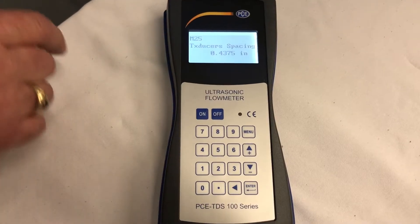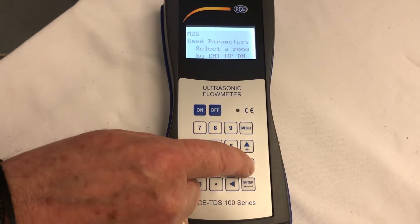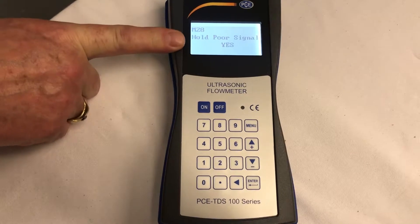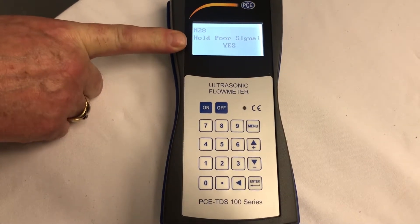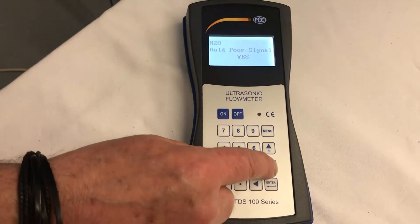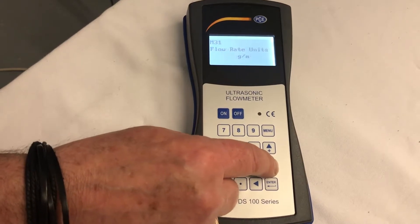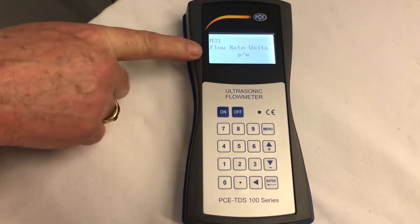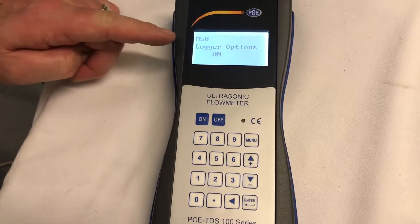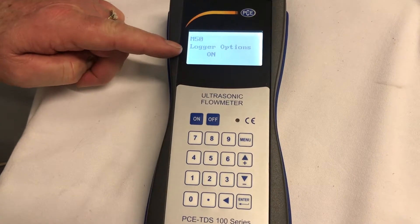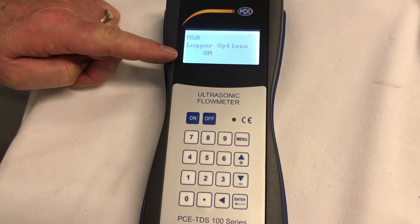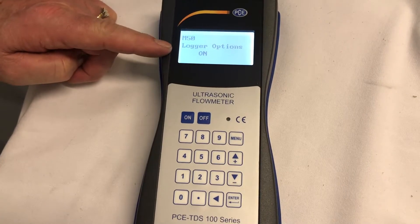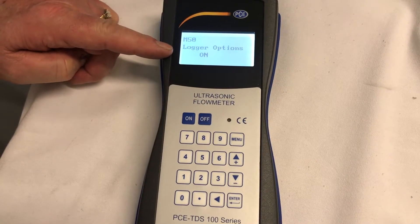Next, we're going to go to M-28, which is for poor signal. M-28. We want to hold the poor signal. Always say yes. After that, we're going to M-31, which is the flow rate. I'm measuring in gallons per minute. Now we're at M-50, logger options on. This is collecting the data from the sensors going into your memory, which is the next step.